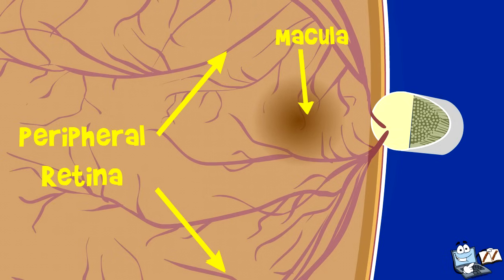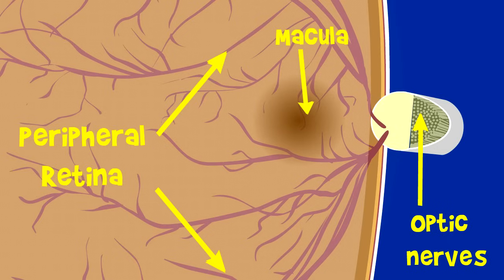The retina converts the rays into signals that are sent through the optic nerves of the brain. Thus, we are able to see everything around us.